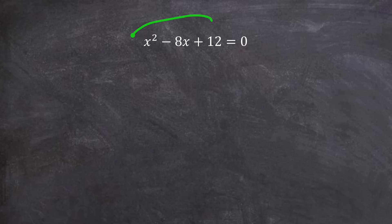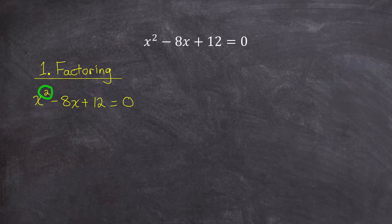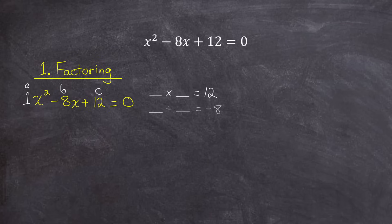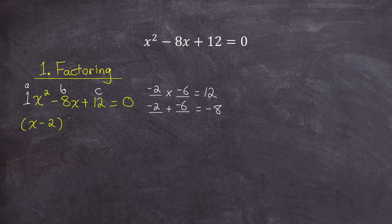The first way I'll solve this equation for x is solving it by factoring. Because this is a quadratic trinomial that has an a value of 1, b value of negative 8, and c value of 12, I can get it into its factored form by finding two numbers that have a product of the c value 12 and a sum of the b value negative 8. The two numbers that satisfy that product and sum are negative 2 and negative 6. Negative 2 times negative 6 is 12, negative 2 plus negative 6 is negative 8, which means that quadratic would factor to x minus 2 multiplied by x minus 6.